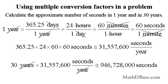In 30 years, there are 30 times 31,557,600 seconds, which is 946,728,000 seconds, or nearly 1 billion seconds.